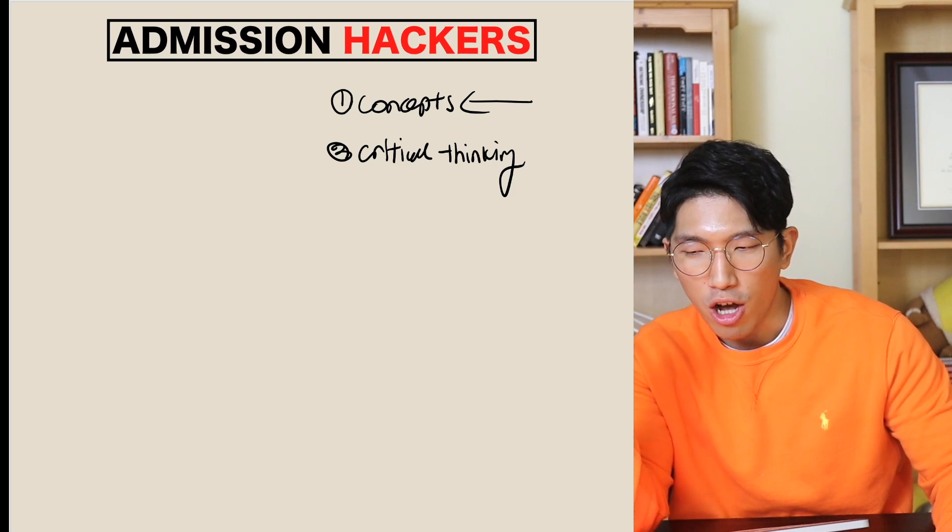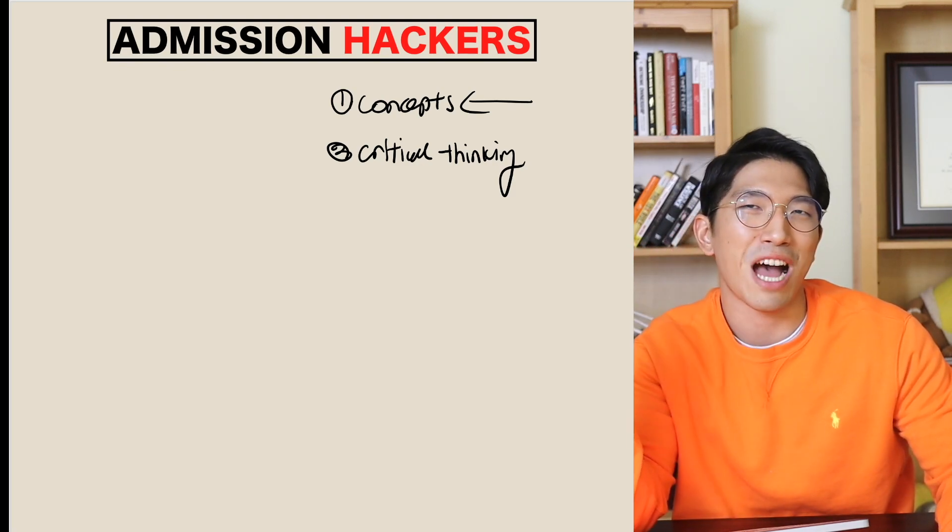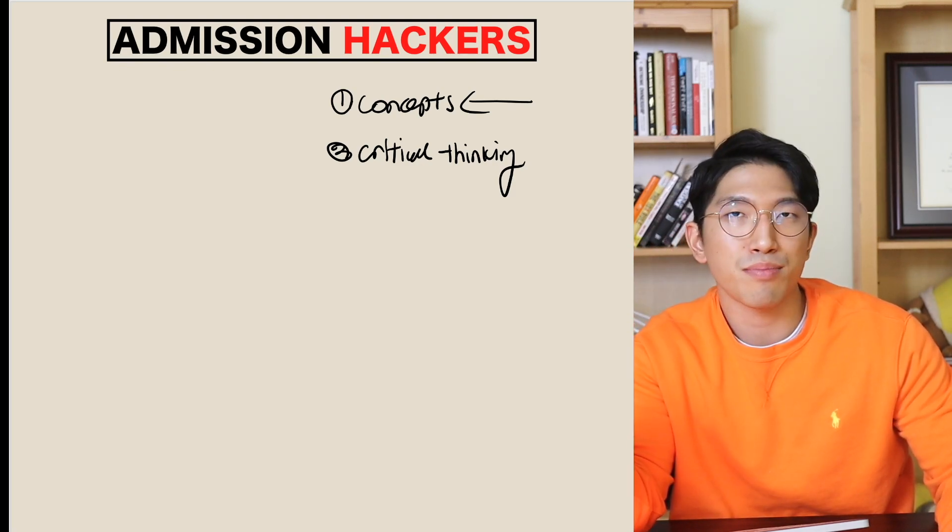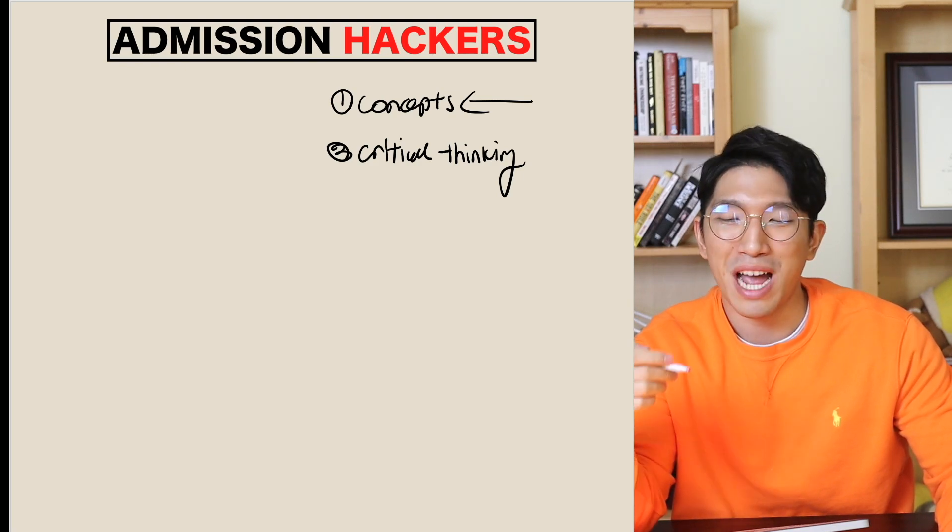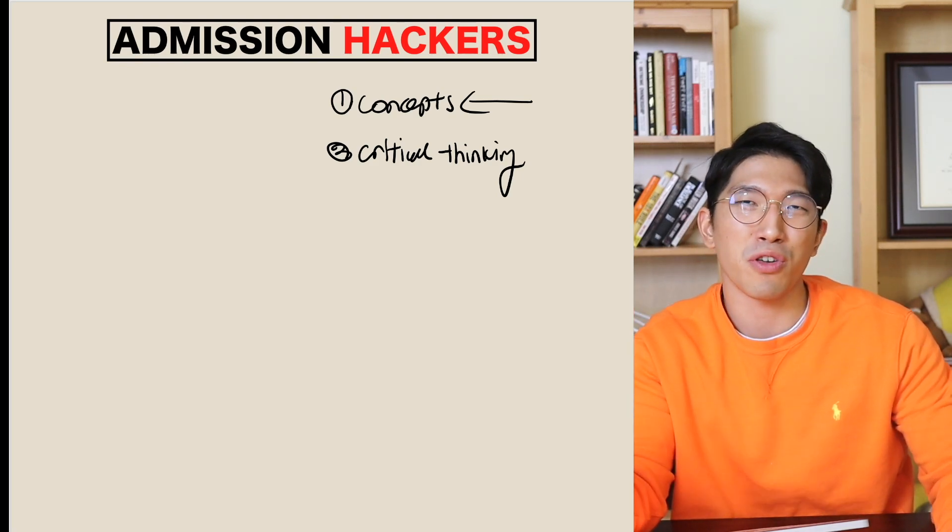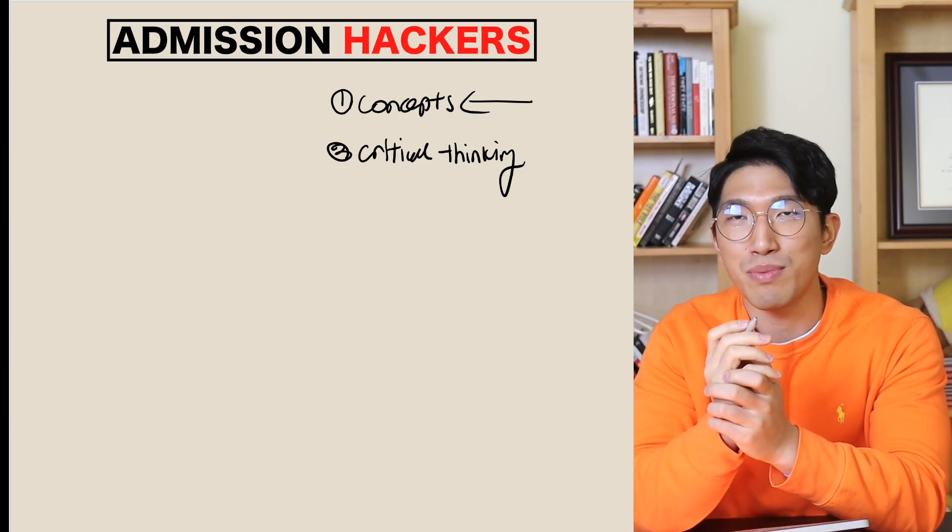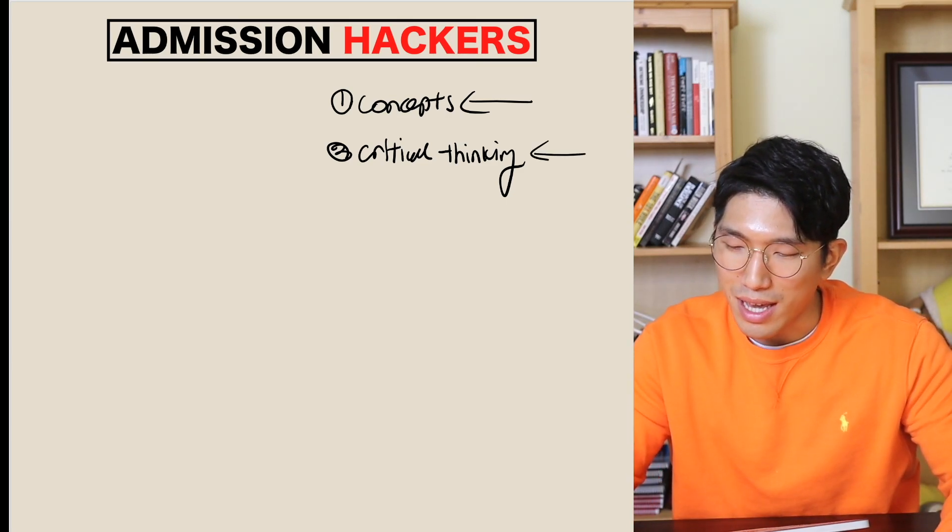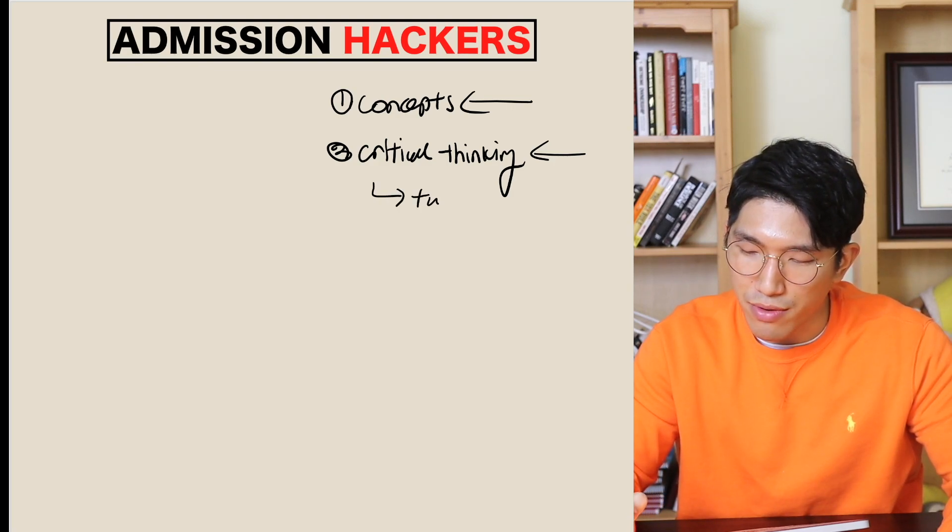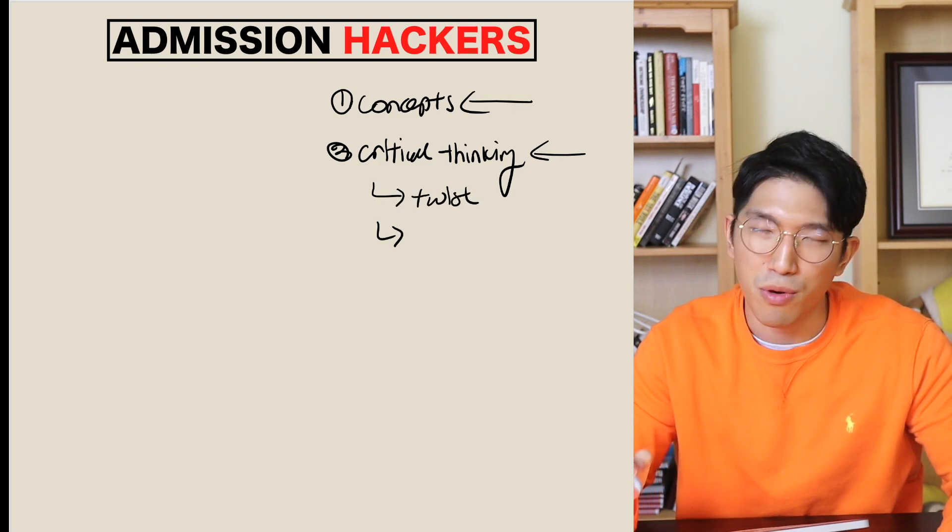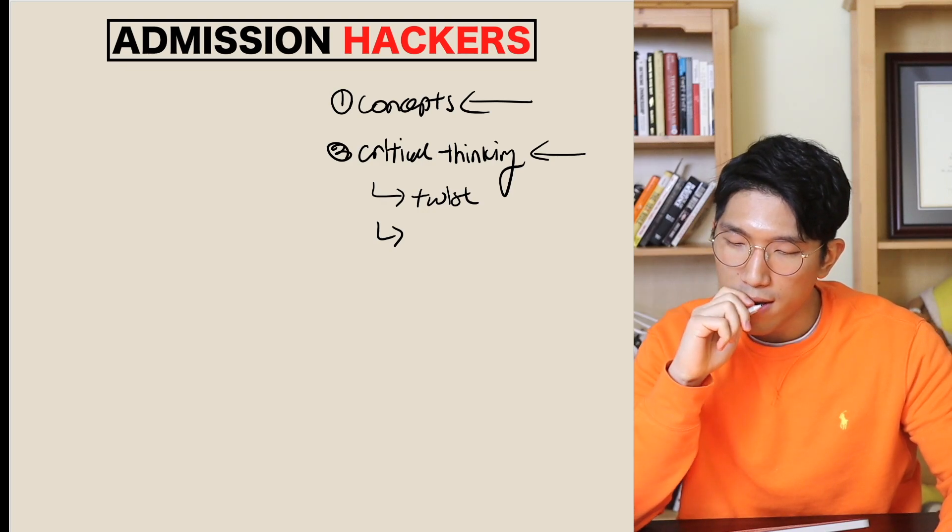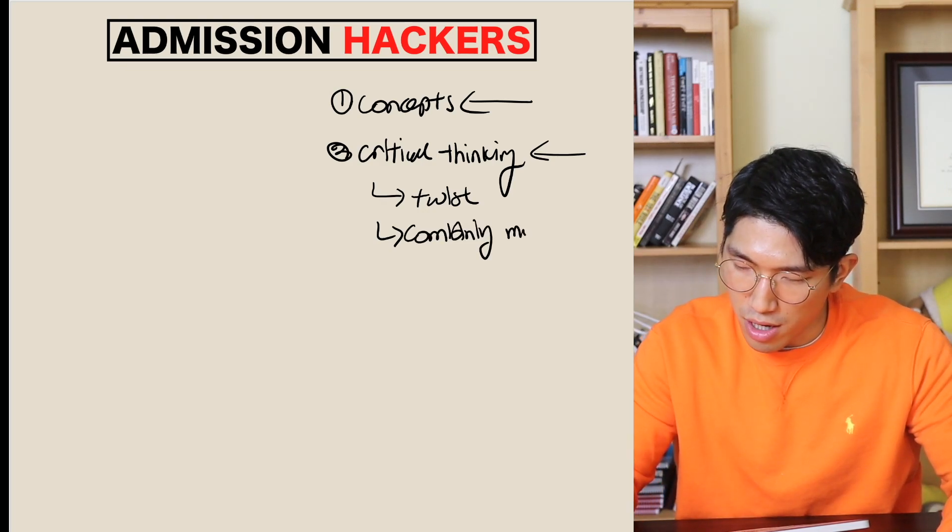So what are these concepts? It's just basic understanding of how math works, like how to add exponents or how Pythagorean theorem works or how to find the area of a circle or volume of a cylinder. Just understanding how to find these things. That's going to be a concept. And what is critical thinking? Critical thinking is your ability to twist the concepts around and apply to the question that you're given or combining multiple concepts.